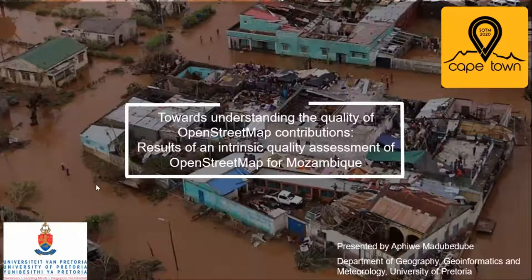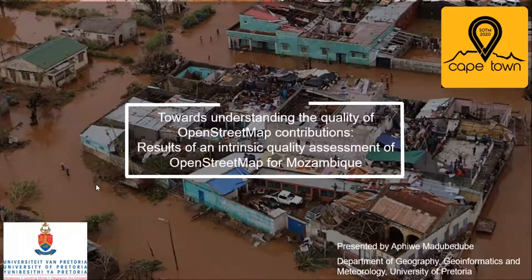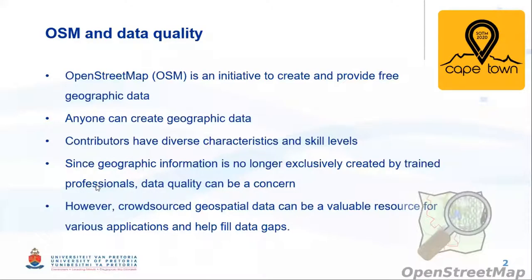Good day. My name is Apiwa Madubidube. I am a master's student at the University of Pretoria, and today I will be speaking about my research project, which focuses on understanding the quality of OpenStreetMap contributions in Mozambique through an intrinsic quality assessment approach. Projects such as OpenStreetMap have made it possible for anyone to contribute geographic information regardless of their level of expertise or skills. Since the task of creating geographic information is no longer exclusively performed by trained professionals, data quality can be a concern and has often been cited as a hindrance to the use of this type of data. However, data generated through crowdsourcing projects such as OpenStreetMap can be a valuable resource and can help fill data gaps.